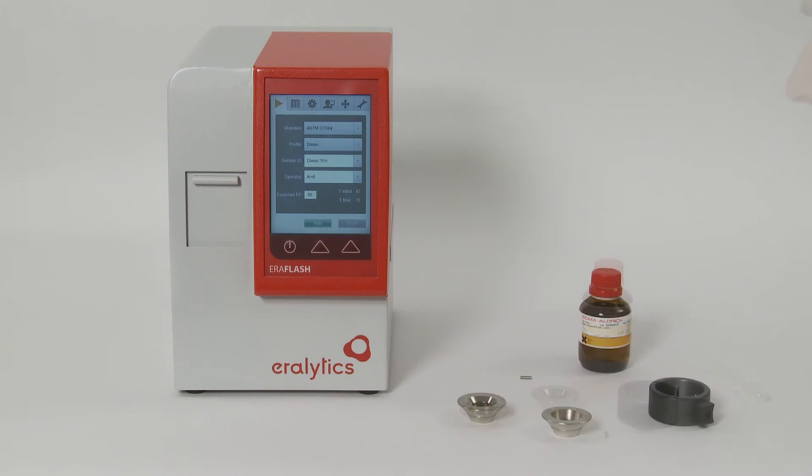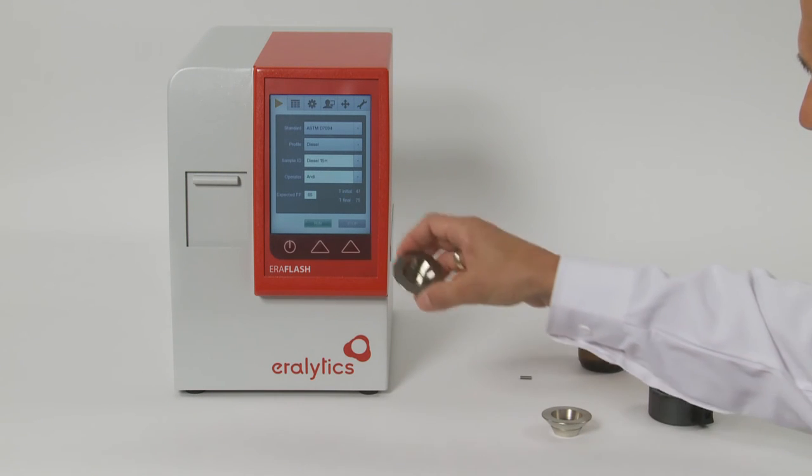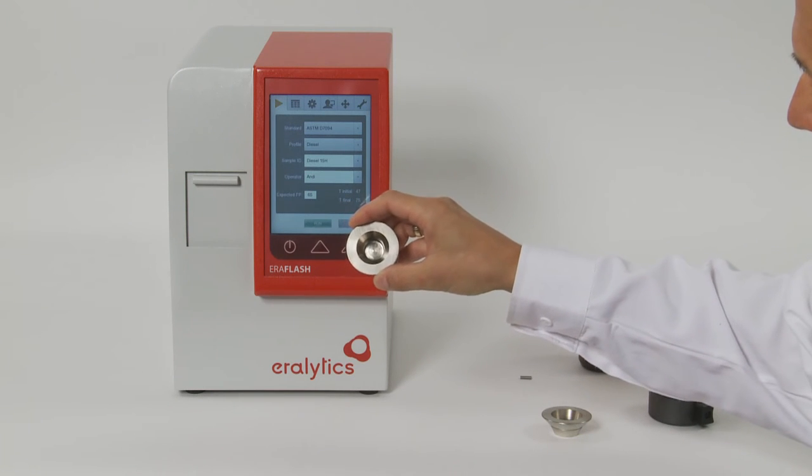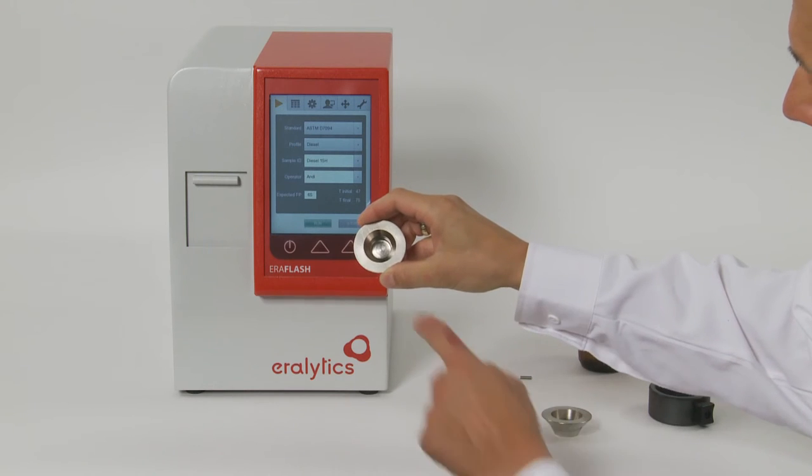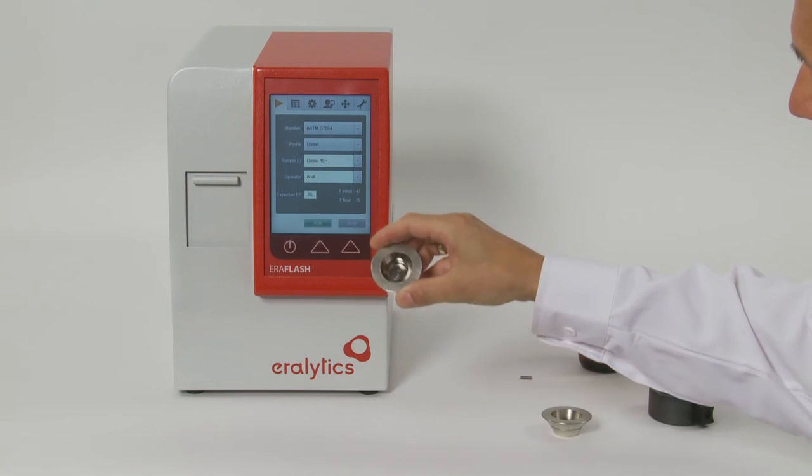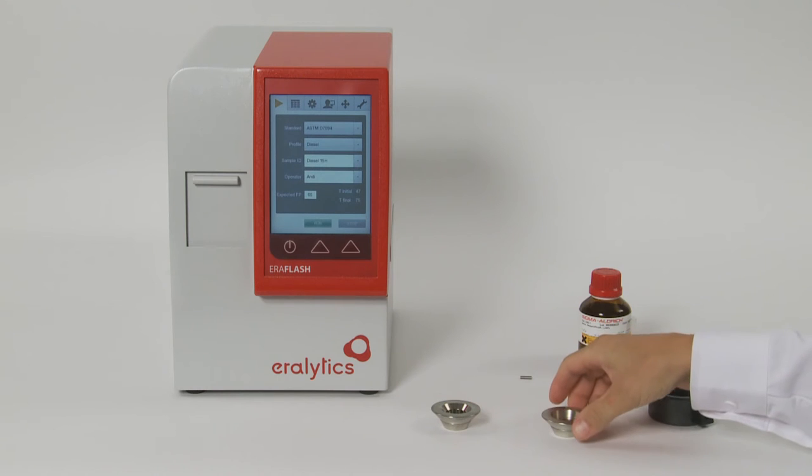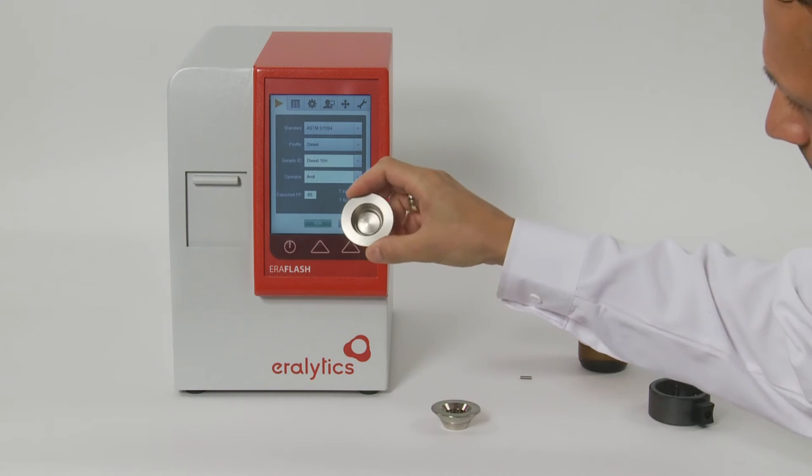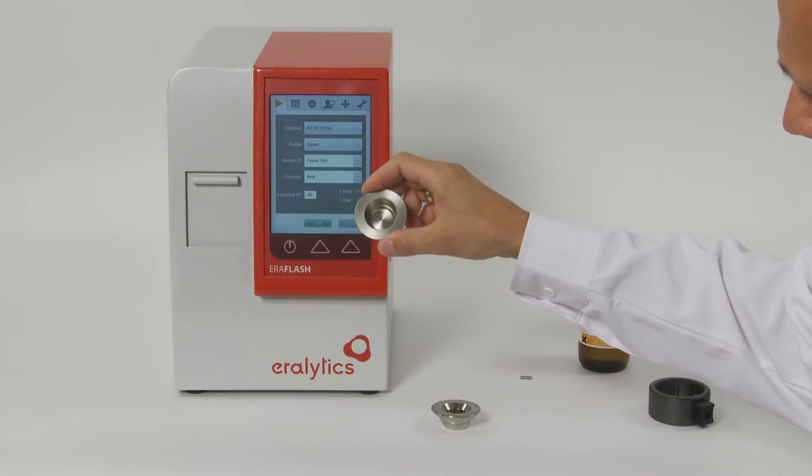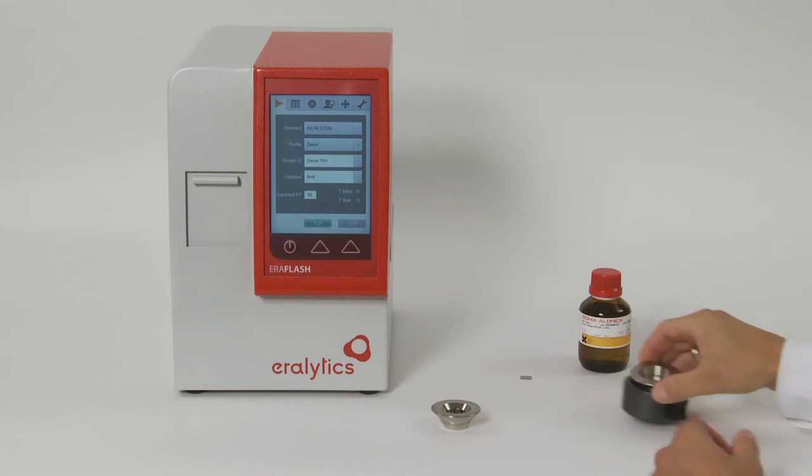There are two different sample cups delivered with the Error Flash: a one milliliter sample cup for ASTM D6450 measurements and a two milliliter sample cup for ASTM D7094 measurements and for all correlation methods.